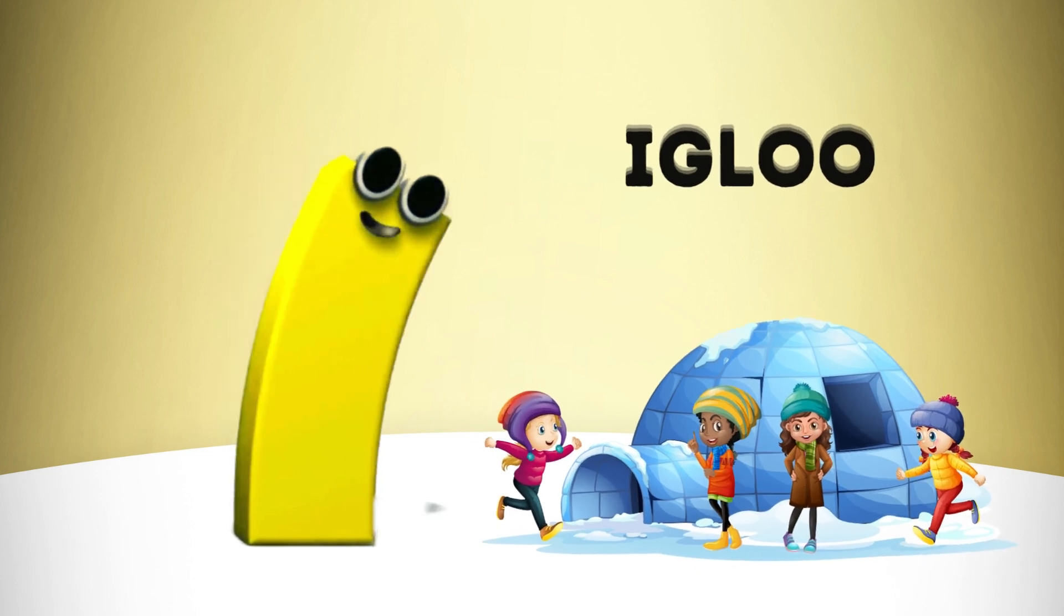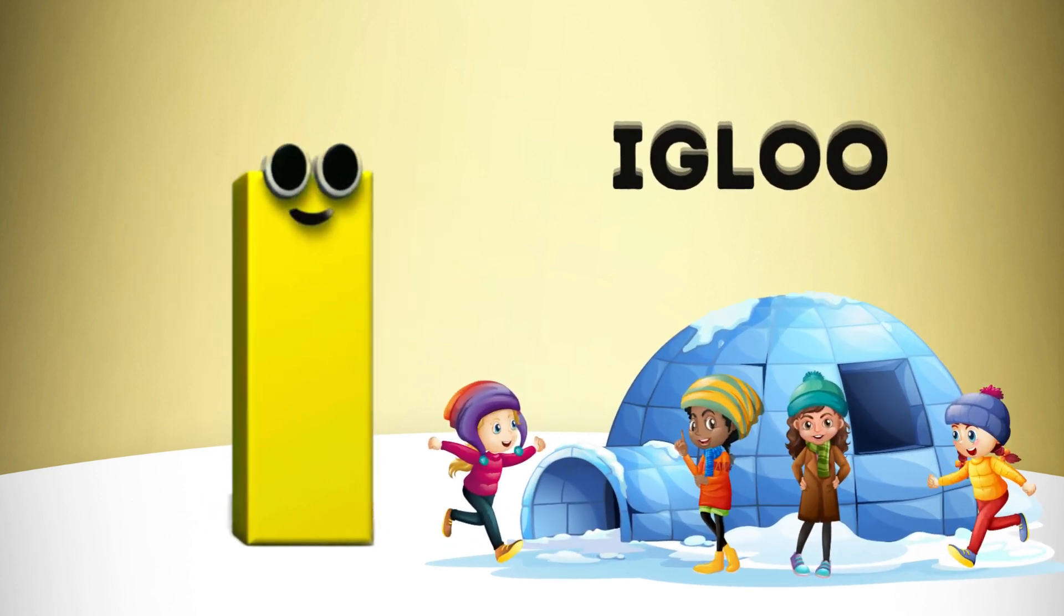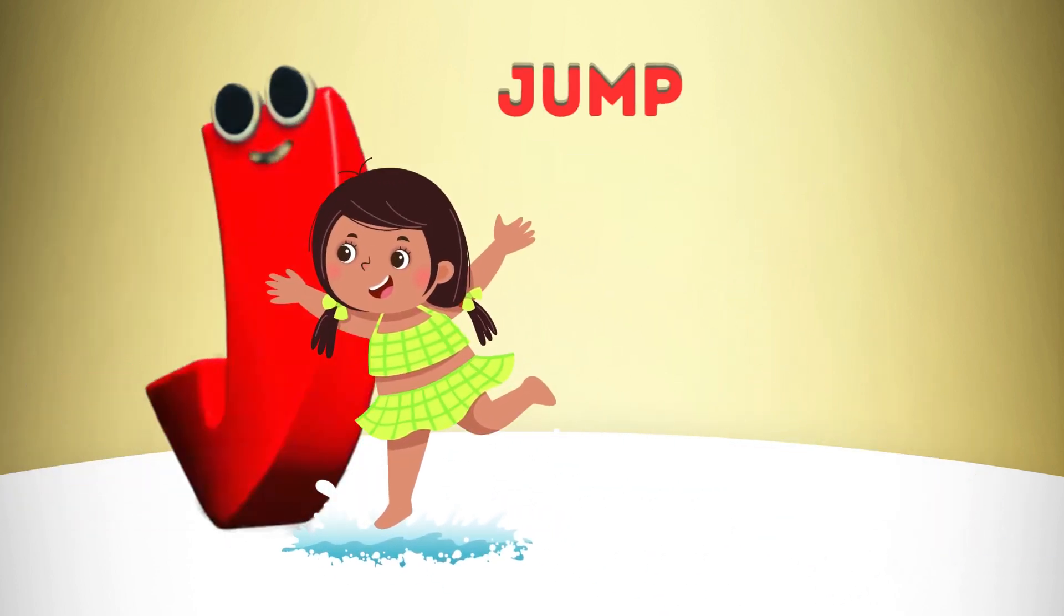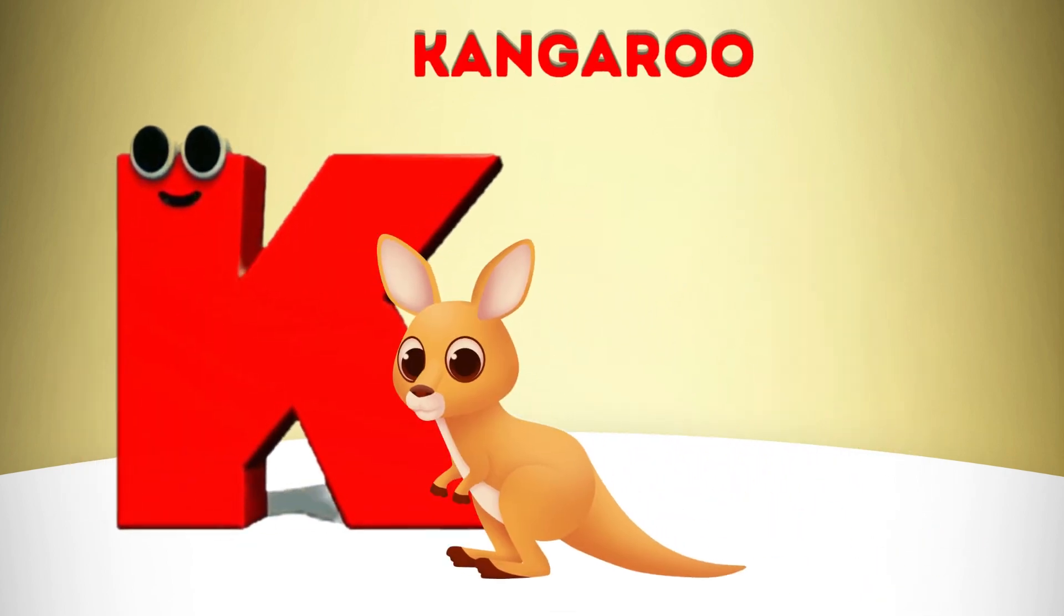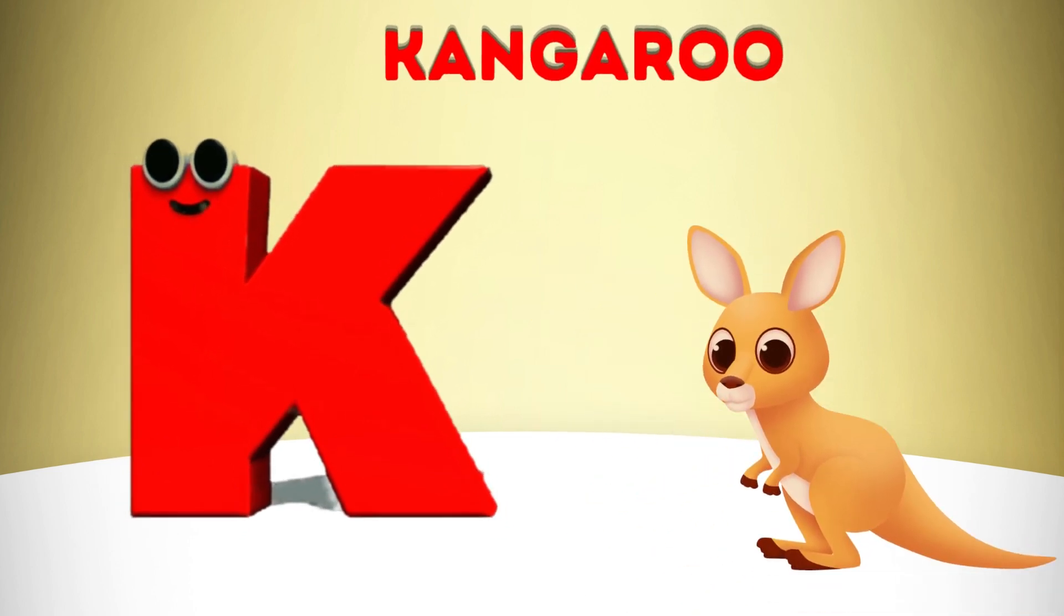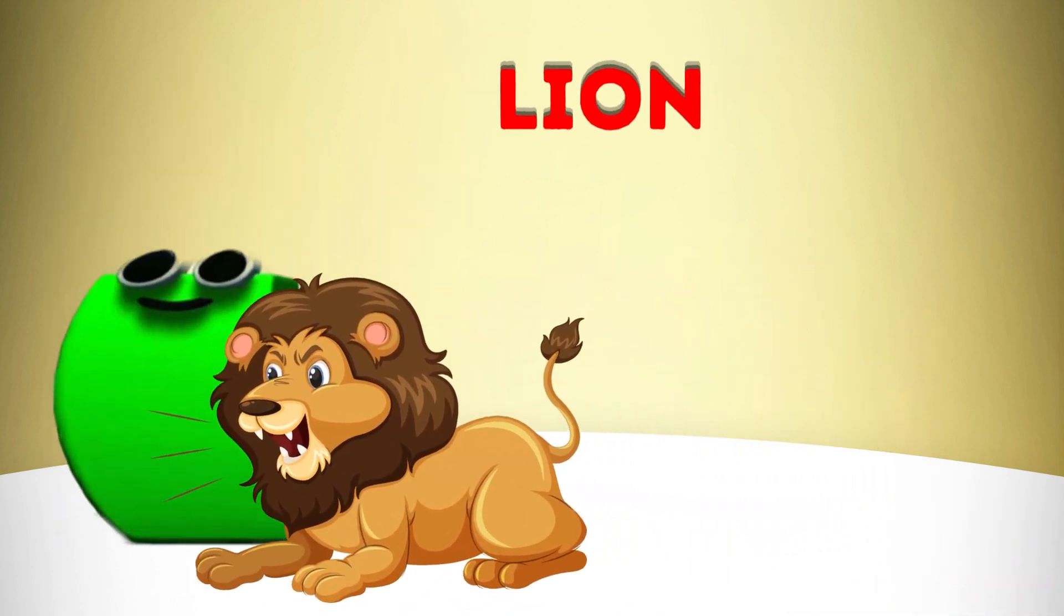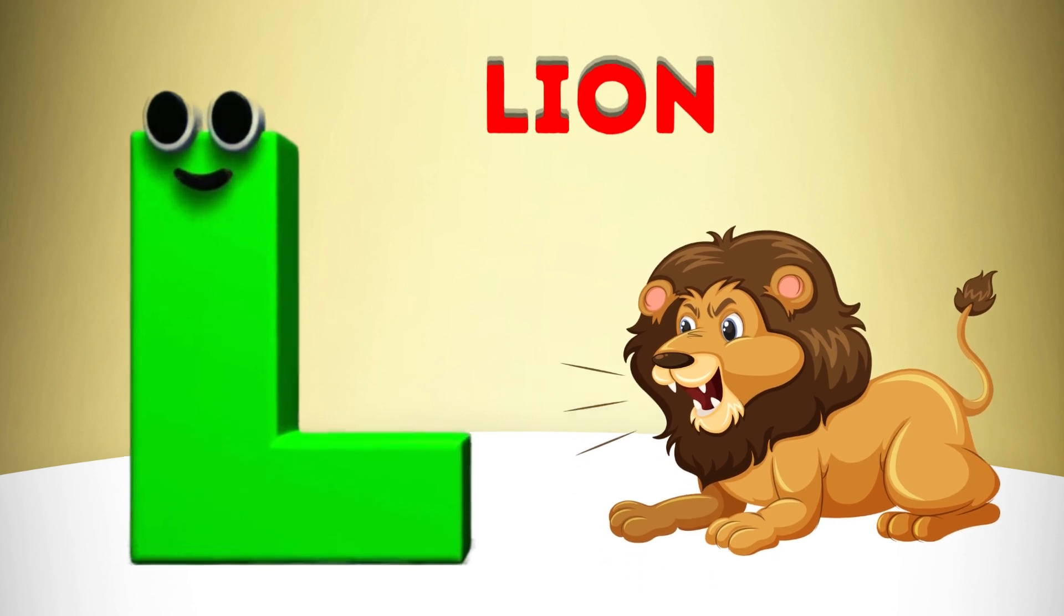I is for Igloo, I-I-Igloo. J is for Jump, J-J-Jump. K is for Kangaroo, K-K-Kangaroo. L is for Lion, L-L-Lion.